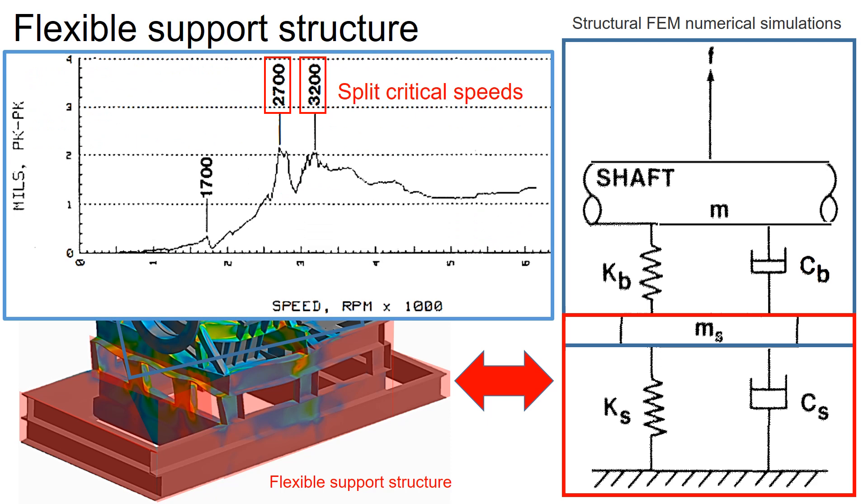In certain cases with flexible support, critical speeds can be split, as shown in this speed versus vibration amplitude plot from the measured data. Identifying flexible support characteristics is key to accurately capturing the critical speeds.